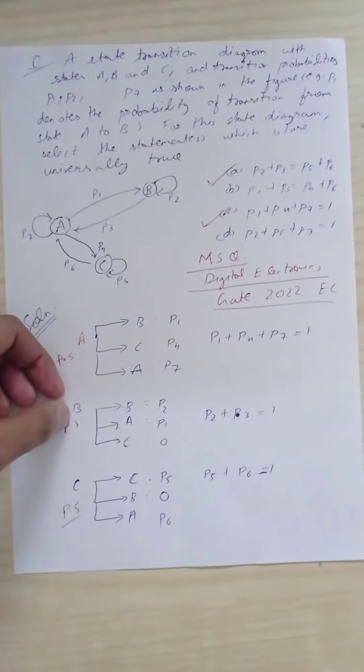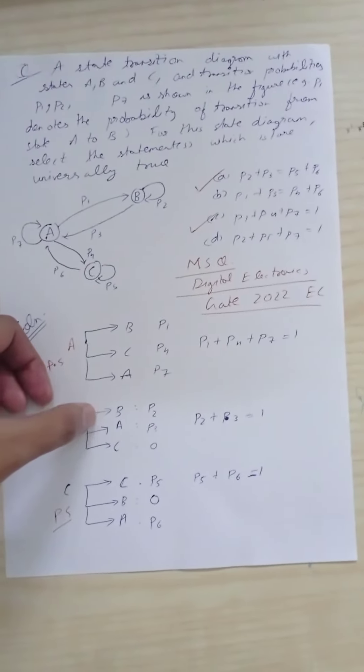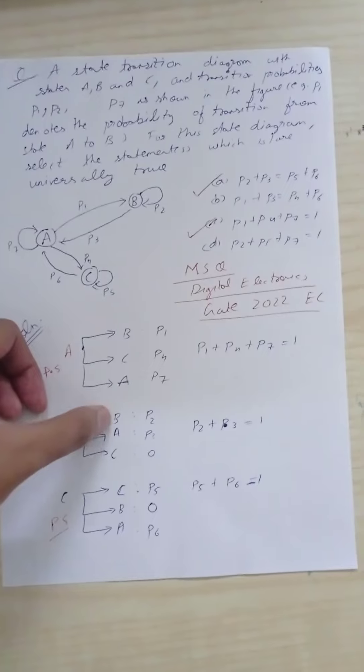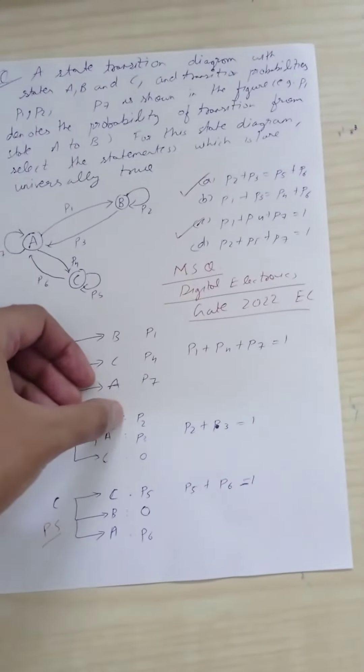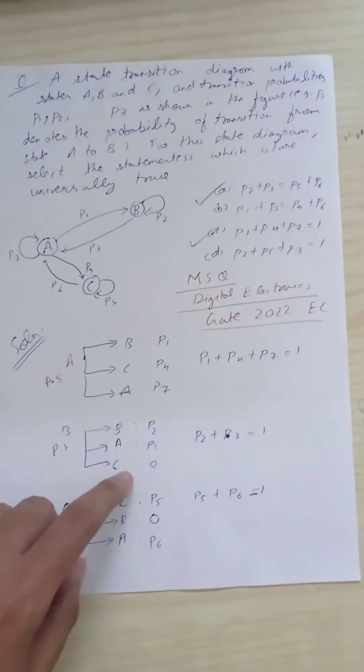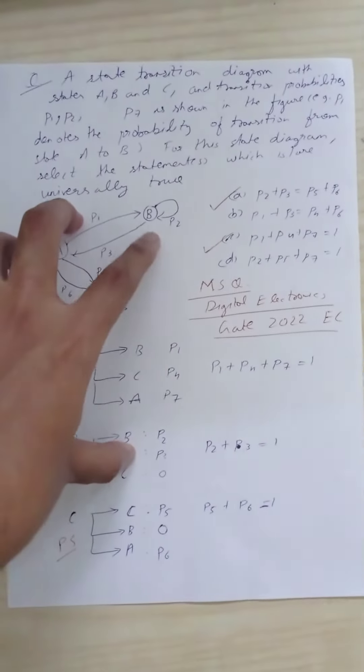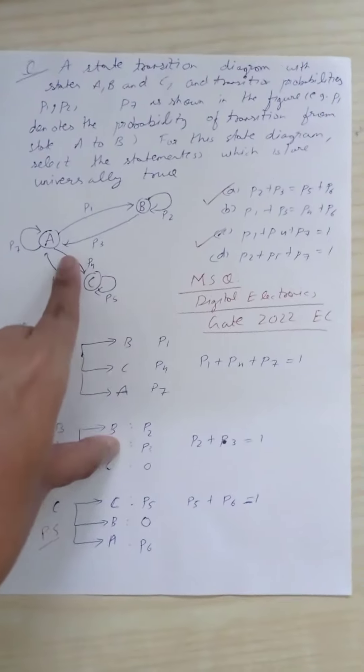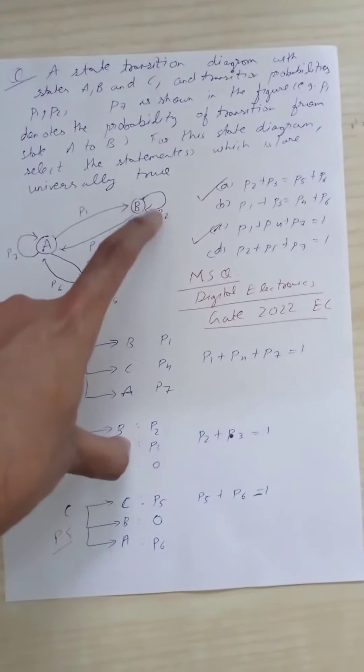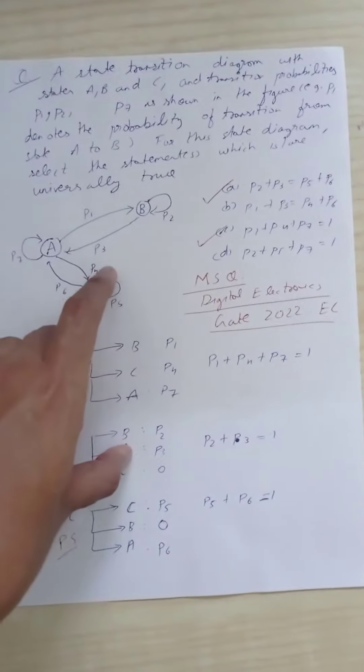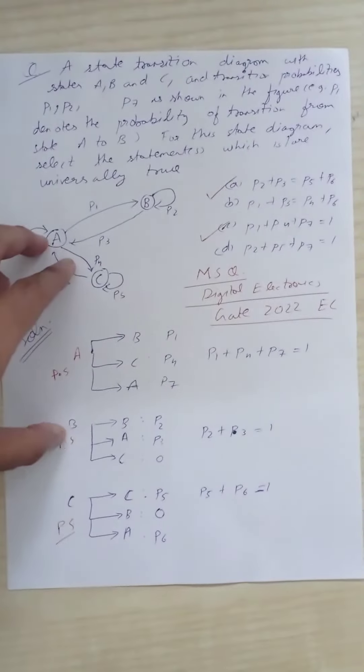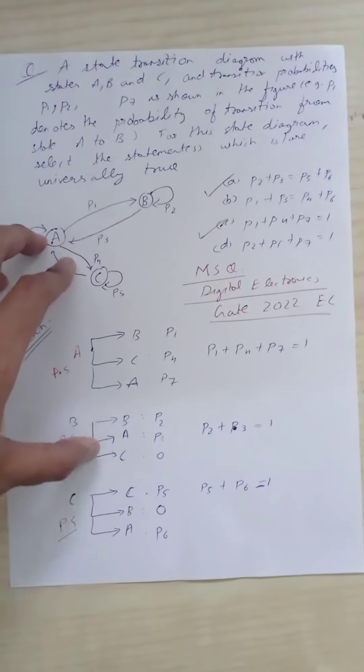If present state is B, it can transition to state B, state A, or state C with probabilities P2 and P3. From B to C there is no transition. From B to B the probability is P2, and from B to A the probability is P3. So P2 + P3 = 1 because from B only these transitions are possible.